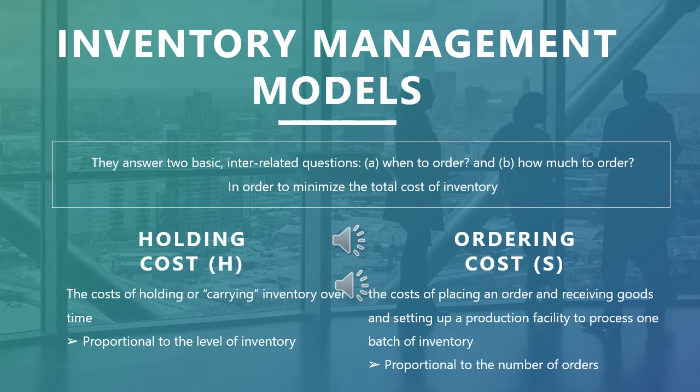The best way to manage this trade-off is to state the problem mathematically — which is what inventory management models do. They define two types of costs: the holding cost, proportional to the number of units held in inventory, and the ordering cost, which depends only on the number of orders made per year. Since demand is constant, the holding cost increases as order size increases, while the ordering cost decreases when we increase order size, since we place fewer orders annually.